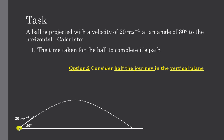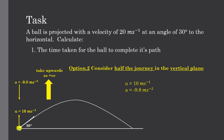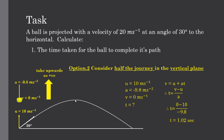Option 2: consider only half the journey in the vertical plane. Again, initial vertical velocity is 10m per second upward, acceleration is negative 9.8m per second squared. At the top point of the trajectory, the vertical velocity is zero. Using the same equation, this gives a time of 1.02 seconds to reach maximum height. By symmetry, the time to descend back to the starting height is also 1.02 seconds, so the total time for the entire journey is again 2.04 seconds.